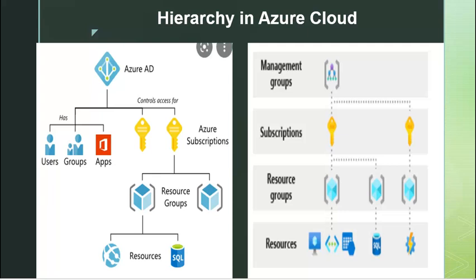We can define what access control groups have for any subscription. We define and attach those groups to the subscription. Under the subscription, we create a resource group. A resource group is just a container where we put similar resources or resources belonging to the same project in one group, so that we can define access control on the resource group. Further, resources can be any type — virtual machines, VNets, SQL, NICs, public IPs, private IPs, application gateways — any resources we use in the cloud can be placed into the resource group.